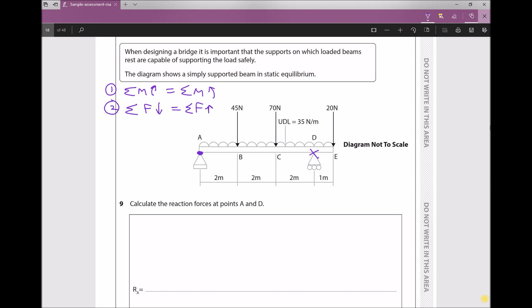Now whenever we have a beam with a UDL the first thing we should always do is replace the UDL with a point load. So we have a UDL that has a weight of 35 newtons for every meter. If we look at this beam the length is 2 plus 2 plus 2 which is 6 plus 1 which is 7 meters.